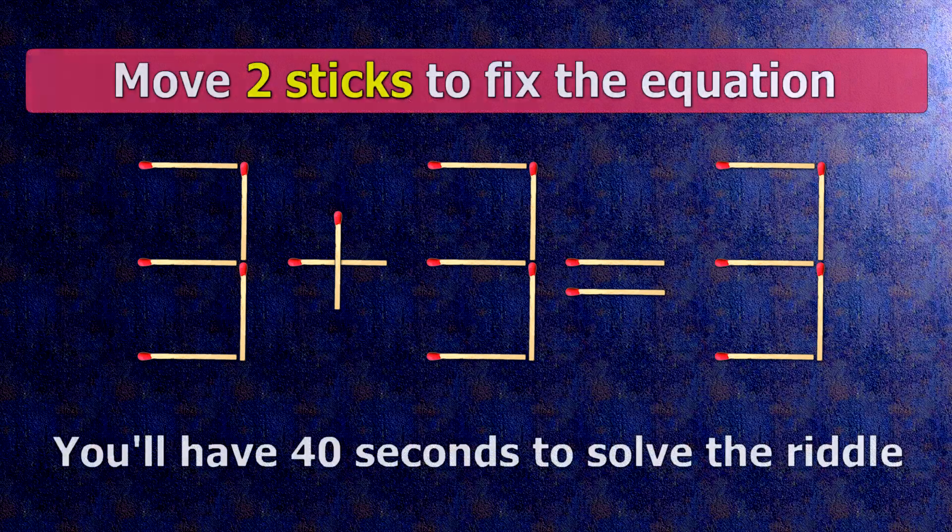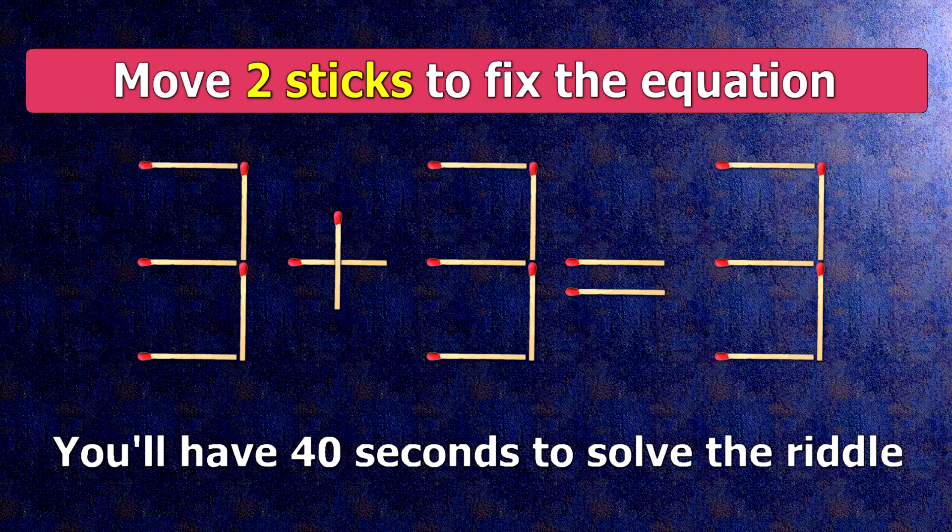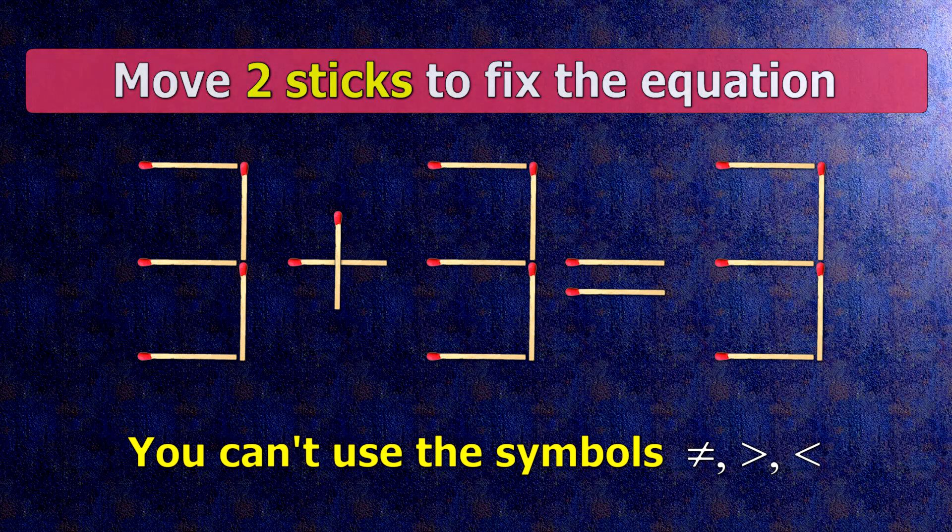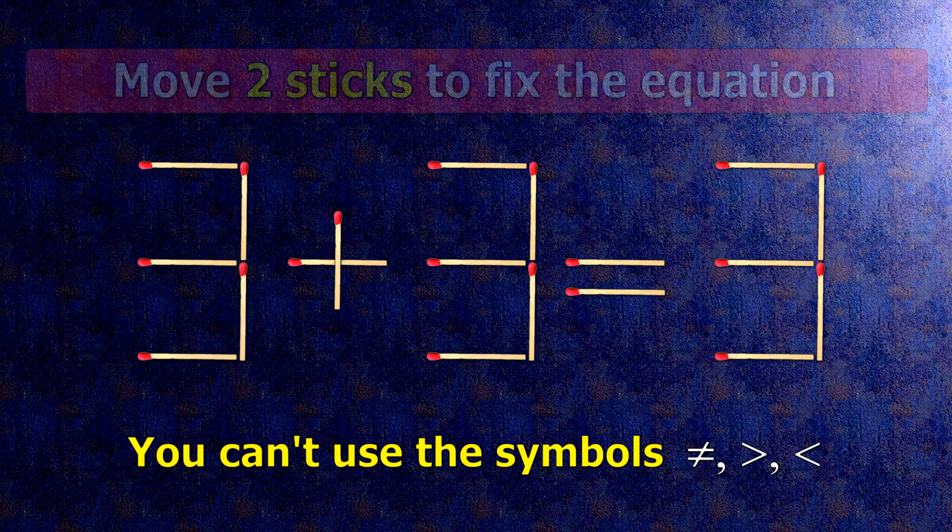We have the equality 3 plus 3 equals 3. Our equality is wrong. We need to move two matches to make our equality correct.